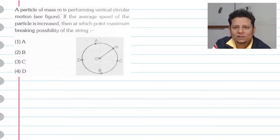Next question. A particle of mass m is performing vertical circular motion as shown in the figure. If the average speed of the particle is increased, then at which point is the maximum breaking possibility of the string?